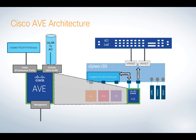Zooming in on the AVE, it has three interfaces: inside, outside, and management. On the inside leg, it's a promiscuous trunk. All of the EPGs that we deploy in ACI will show up there. We'll attach our VMs like we always do — nothing has really changed. All of that traffic will then lead to the AVE, where we can apply policy and all the features that you want.